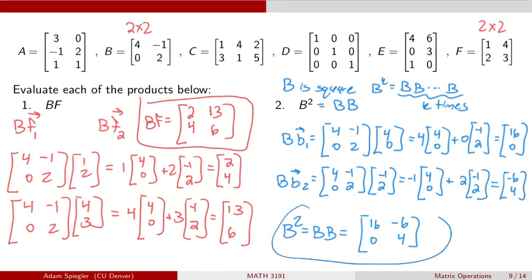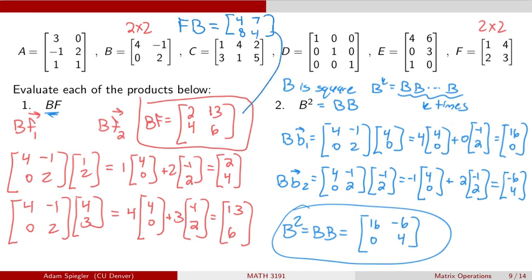In the next video, I'll verify these products using Python and Google Colab. One thing we'll see is that if I take the product of B and F in the opposite order, F times B, we get first row [4, 7] and second row [8, 4] — a totally different matrix than B times F. So matrix multiplication is not a commutative operation. Just be aware of that.